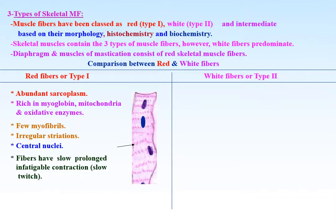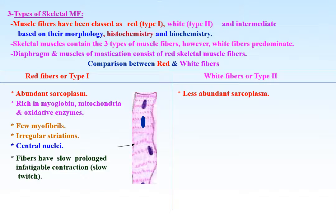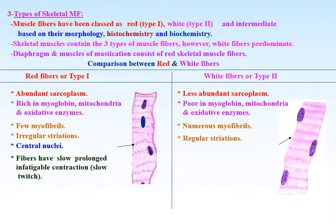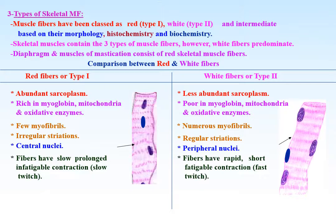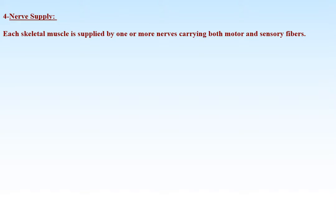Red fibers or type 1 have slow, prolonged, indefatigable contraction — that is, slow twitch. White fibers or type 2, on the other hand, have less abundant cytoplasm or sarcoplasm, poor in myoglobin, mitochondria, and oxidative enzymes, but have numerous myofibers and regular striations. The nuclei are peripheral in position.